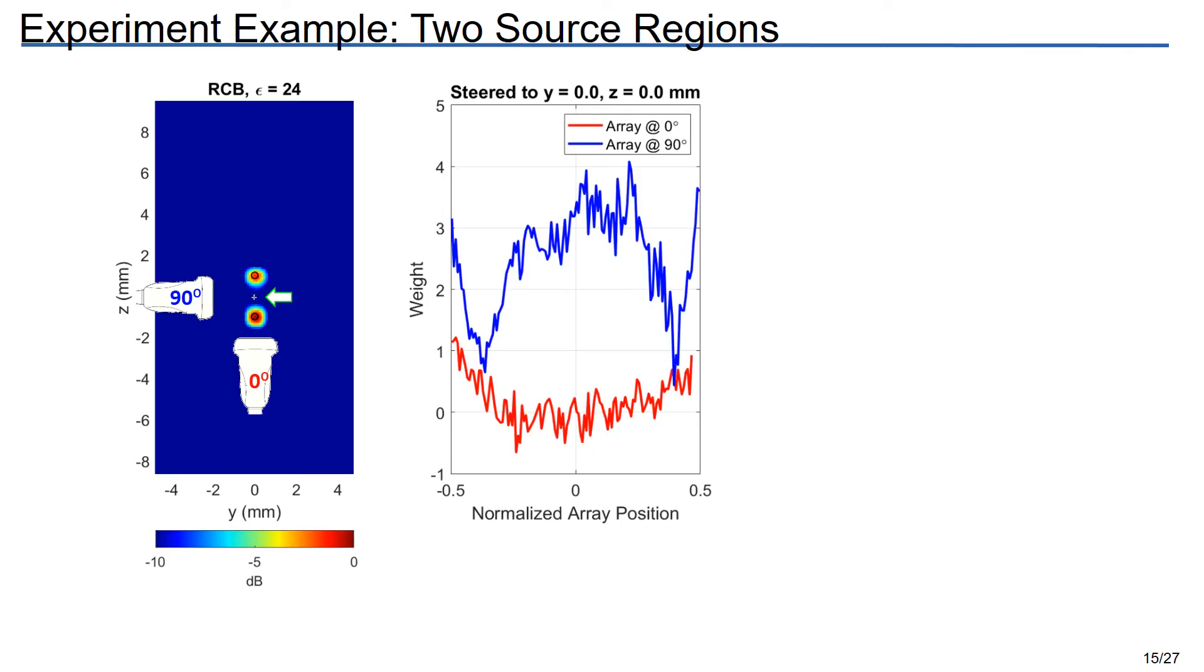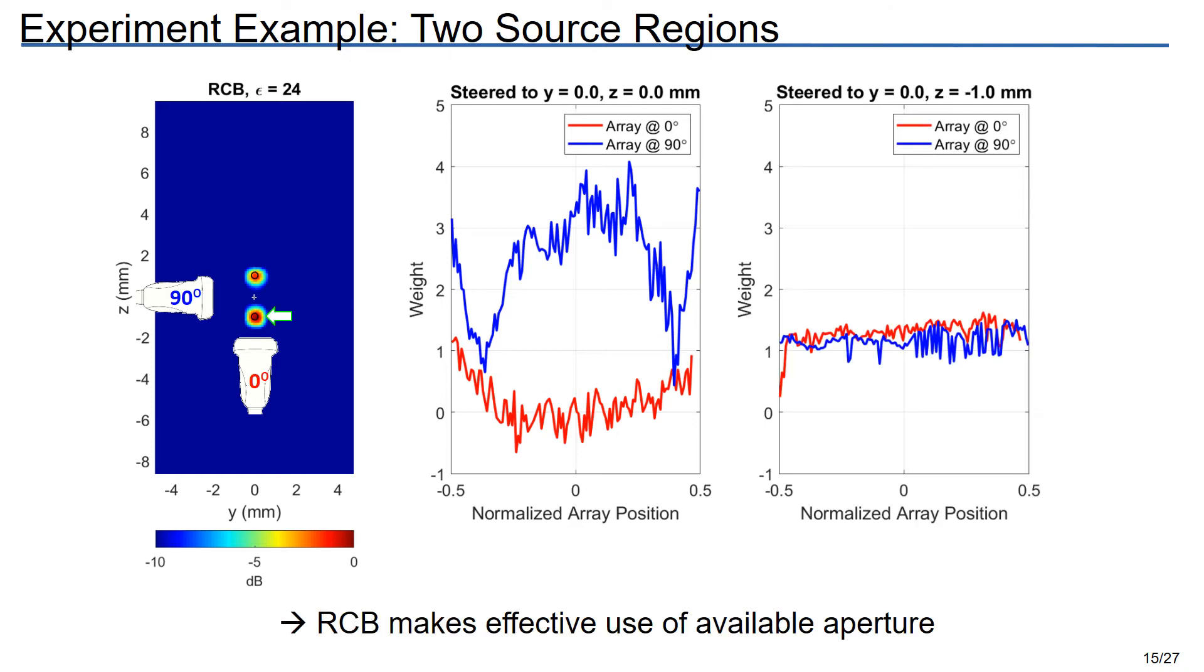Once again, if we want to understand why RCB is working so well, we have to look at the weights. So first we look at the origin, the location between the two source regions, and the weights for the two arrays look quite different. The array at 90, which has a clean look at the origin, is up-weighted considerably, while the array at 0 is all but turned off. By contrast, when we look directly at one of the source regions, we find that both the arrays are weighted similarly. This kind of behavior is observed throughout the imaging plane, and we do see that RCB makes effective use of available aperture.